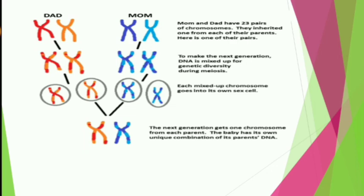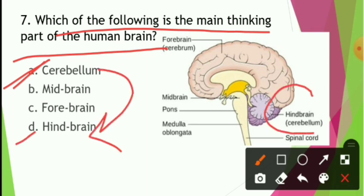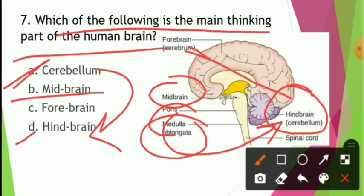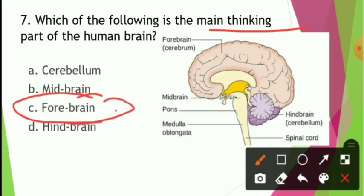Which of the following is the main thinking part of the brain? Cerebellum is a hindbrain part — hindbrain includes cerebellum, medulla oblongata, and pons. Midbrain connects the forebrain and hindbrain. Forebrain is basically responsible for thinking. So the answer is option C — forebrain.